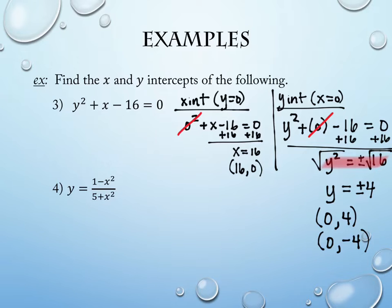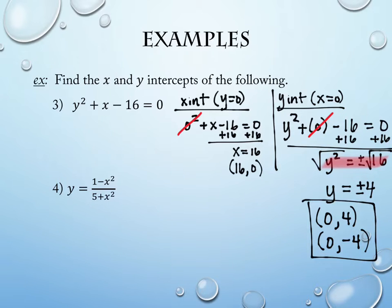Don't be misled and think the ordered pair is (4, negative 4) — those are both y-values, and the x-value in both cases was 0. Every time you have a point, write it as an ordered pair. You can write them as (0, ±4) or list them separately as (0, 4) or (0, negative 4).